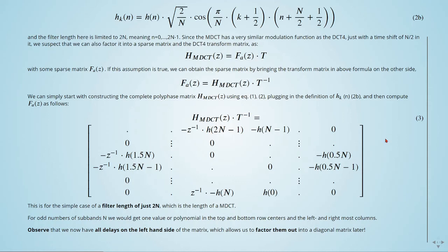Observe that we now have all delays on the left side of the matrix, which allows us to factor them out. So we just see the delays on the left side of the matrix and there are no delays here.